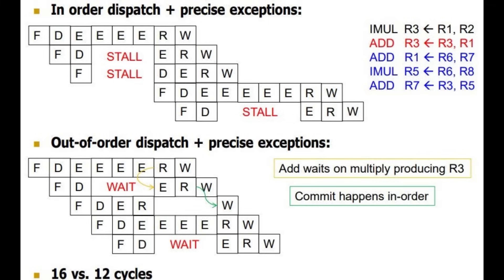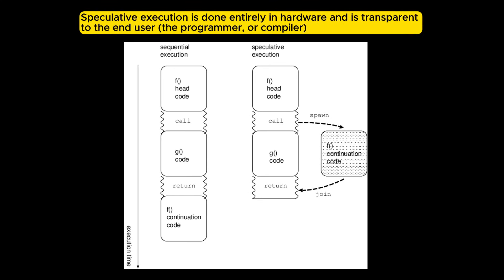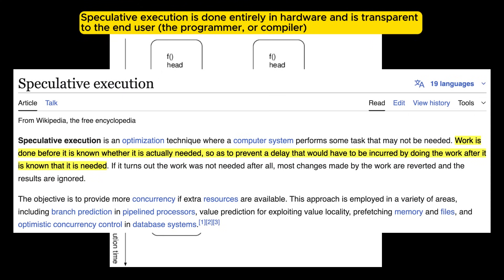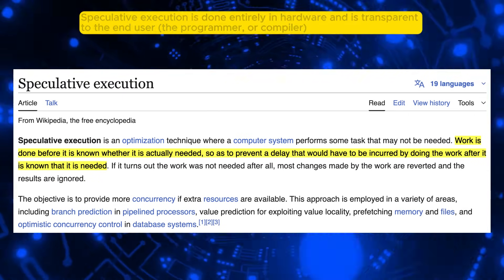Out-of-order execution further optimizes this by allowing instructions to be processed in a different order than they appear in the program. This is done by identifying and prioritizing instructions that are ready to execute, even if earlier instructions are not yet complete, improving performance by avoiding stalls caused by data dependencies. Speculative execution predicts the outcome of branching instructions — for example if-else statements — and executes instructions along the predicted path even before the branch condition is fully evaluated. If the prediction is incorrect, the executed instructions are discarded and the correct path is followed.